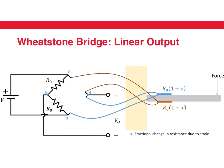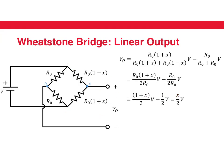Instead of connecting the second strain gauge in a place where there is no strain, we can connect it on the opposite surface to the first strain gauge. That surface experiences strain in the opposite direction — when the top surface is expanding, the bottom surface is contracting — so the resistance changes have opposite signs. When we put these strain gauges in the Wheatstone bridge and do the maths, the output is completely linear without needing any simplifying assumptions, unlike the previous cases.